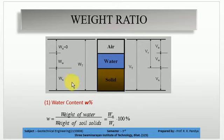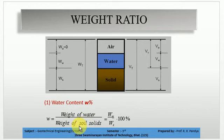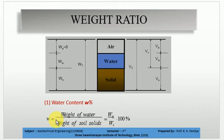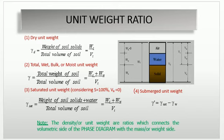Next is weight ratio. Water content is a weight ratio, denoted by w. Water content is the ratio of weight of water to the weight of soil solids. We take a soil sample in its natural condition, then oven dry it, and from the difference between the natural condition weight and the oven-dry weight we get the water content. The equation is: w = (Ww / Ws) × 100.